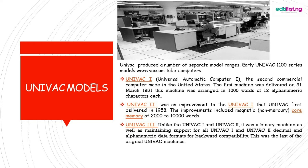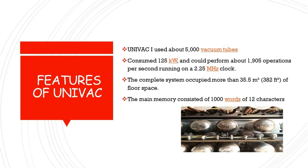Now let's look at some of the features of UNIVAC — the physical and main memory features. UNIVAC 1, the Universal Automatic Computer 1, uses about 5000 vacuum tubes. As you can see, vacuum tubes are very large, and it uses about 5000 of them. It also consumes a lot of power — as we know, first generation computers consume a lot of power — specifically about 125 kilowatts of power. It can perform about 1905 operations per second, running on a 2.25 MHz clock. The complete system occupies more than 35.5 square meters of floor space. Lastly, the memory consists of 1000 words of 12 alphanumeric characters.